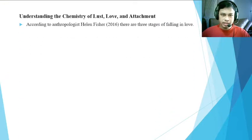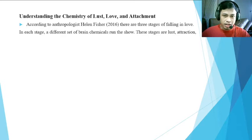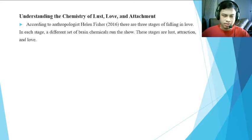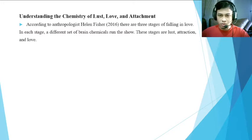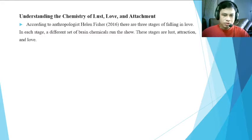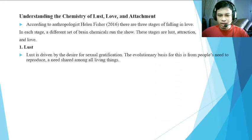According to anthropologist Helen Fisher, there are three stages of falling in love, and in each stage a different set of brain chemicals runs the show. These stages are lust, attraction, and being in love. Each of these three stages has specific brain chemicals that become active. Understanding the chemistry of lust, love, and attachment is the focus of this lesson.